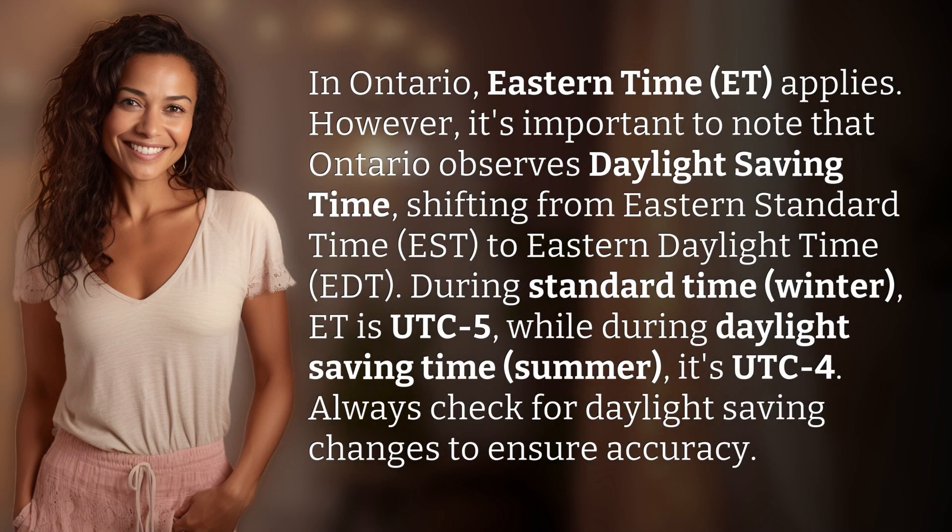In Ontario, Eastern Time applies. However, it's important to note that Ontario observes Daylight Saving Time, shifting from Eastern Standard Time to Eastern Daylight Time. During Standard Time — winter — ET is UTC-5,